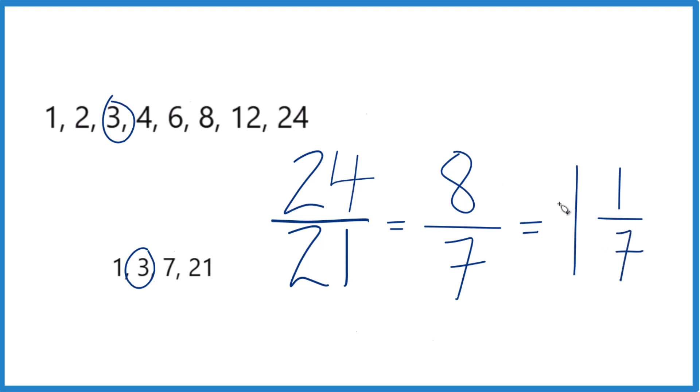So 8/7, that's the same as the mixed number 1 and 1/7. You can check that. 1 times 7 is 7. 7 plus 1, that's the 8. Just keep the 7 the same.